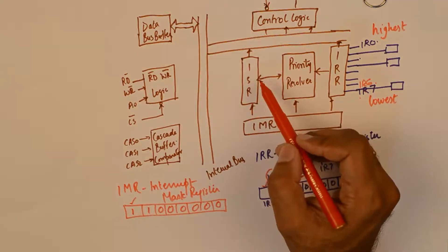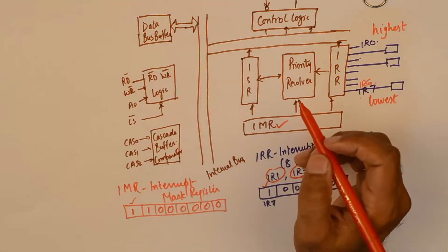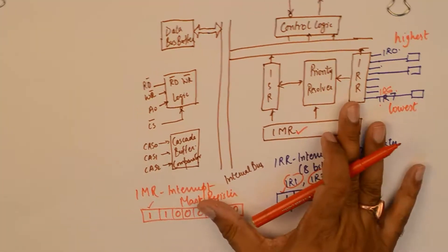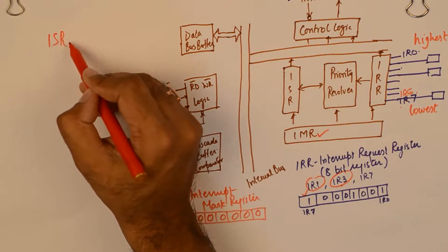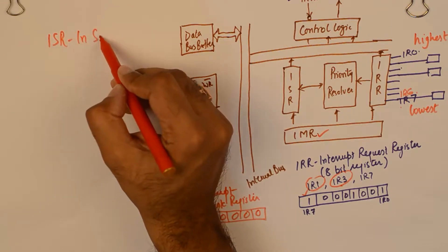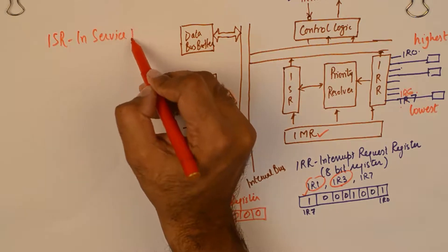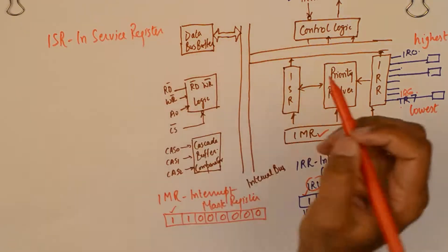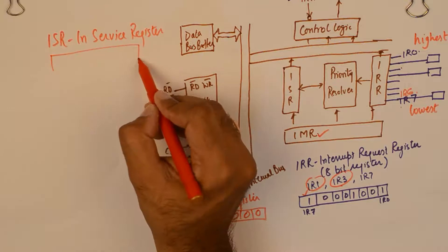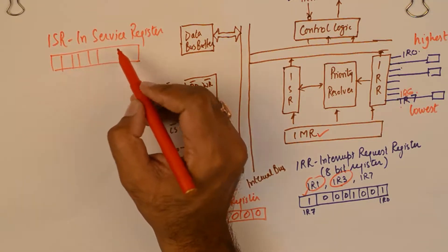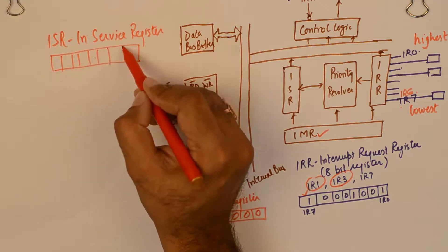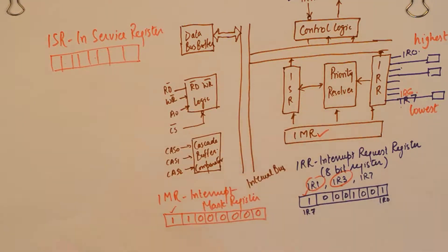This priority resolver will also check the third special function register inside 8259 which is ISR in service register. This register again is an 8 bit register and each bit will suggest if an interrupt is already being serviced by a microprocessor.